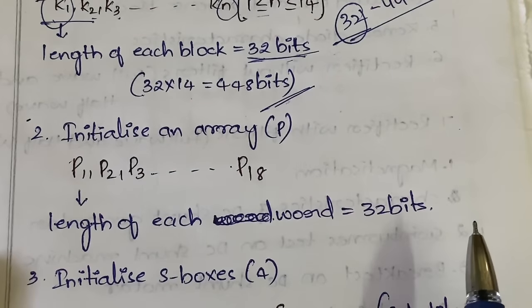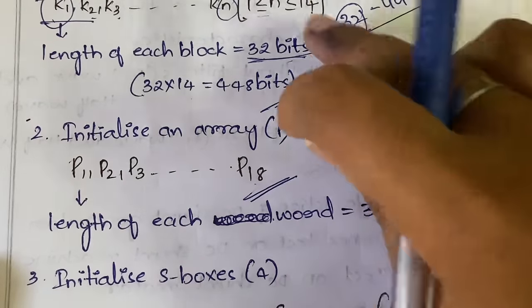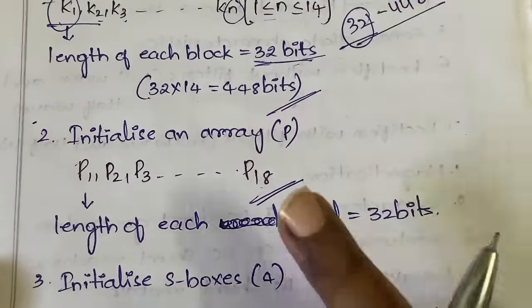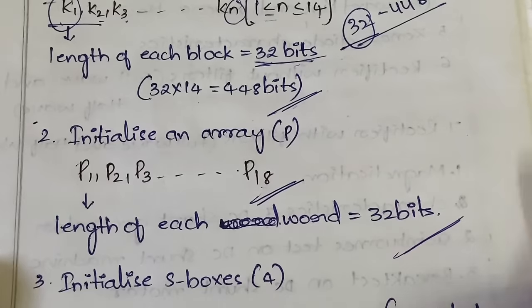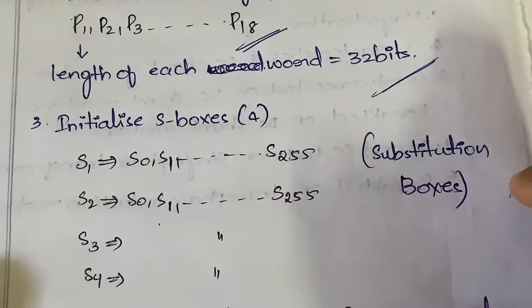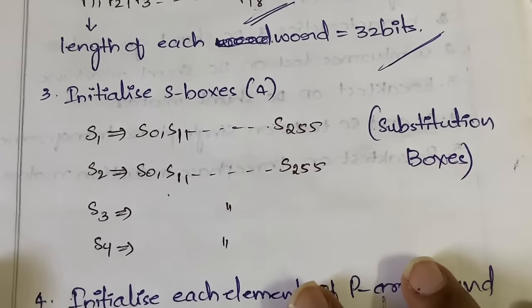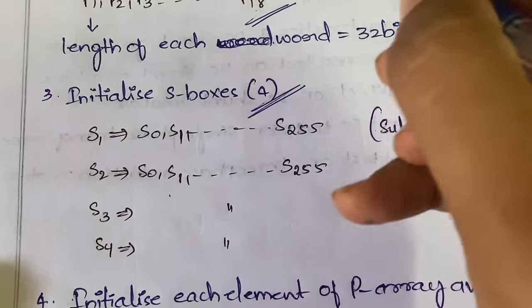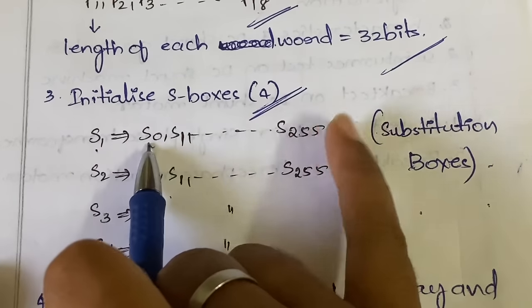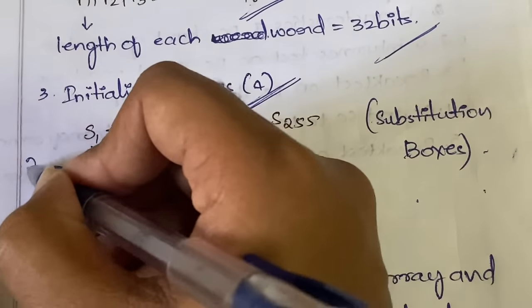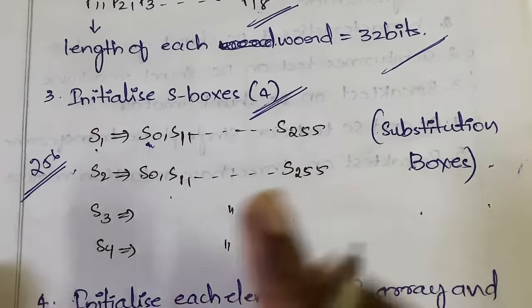The second step is initializing the P array. In the P array you have a total of 18 words, and the length of each word is 32 bits. After the key array and P array, you go to the S-boxes. You need to initialize S-boxes — substitution boxes. Each S-box will have values from s0 to s255, meaning each S-box has 256 values. There are 4 S-boxes and all of them follow the same structure.